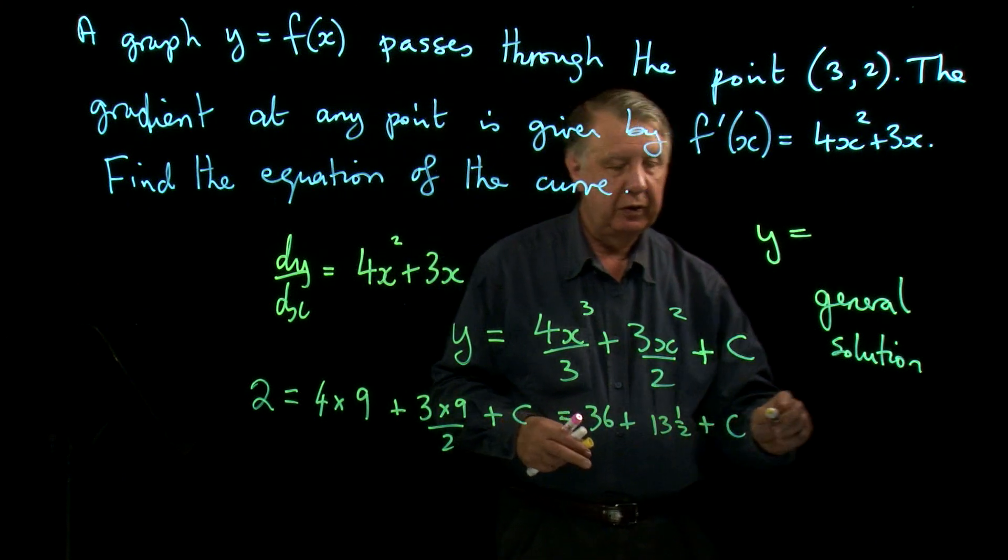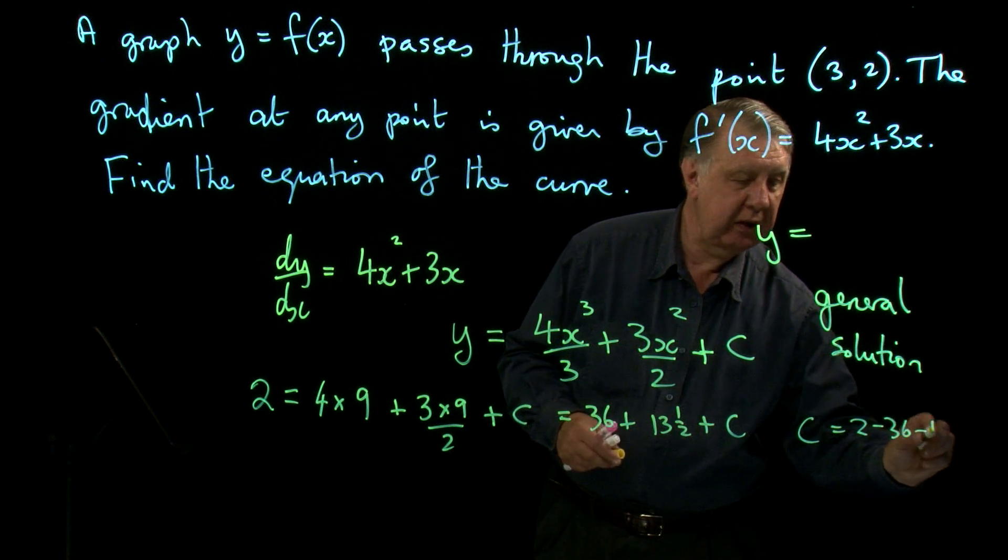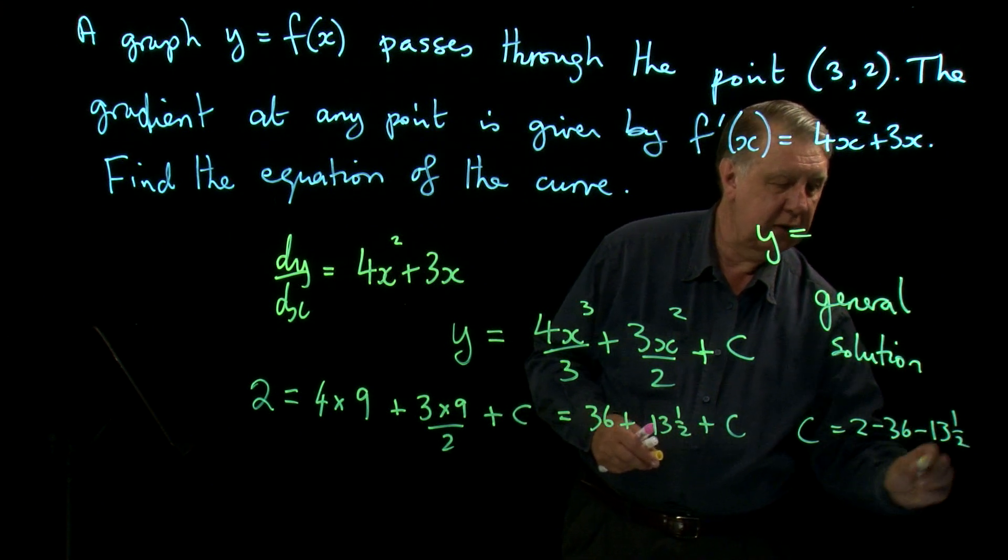Therefore, c equals 2 take away 36 take away 13 and a half.